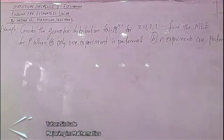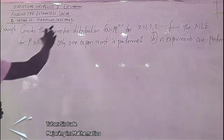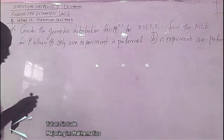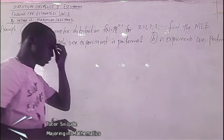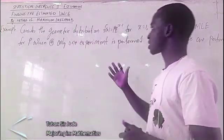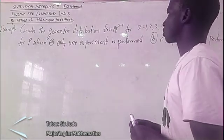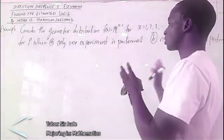So we are on it again. Today we will be looking at statistical inference — estimation — that is finding the expected or estimated value by method of maximum likelihood. That is what I will be looking at today. You will just look at what I will be explaining: the steps on how to get it by method of maximum likelihood.